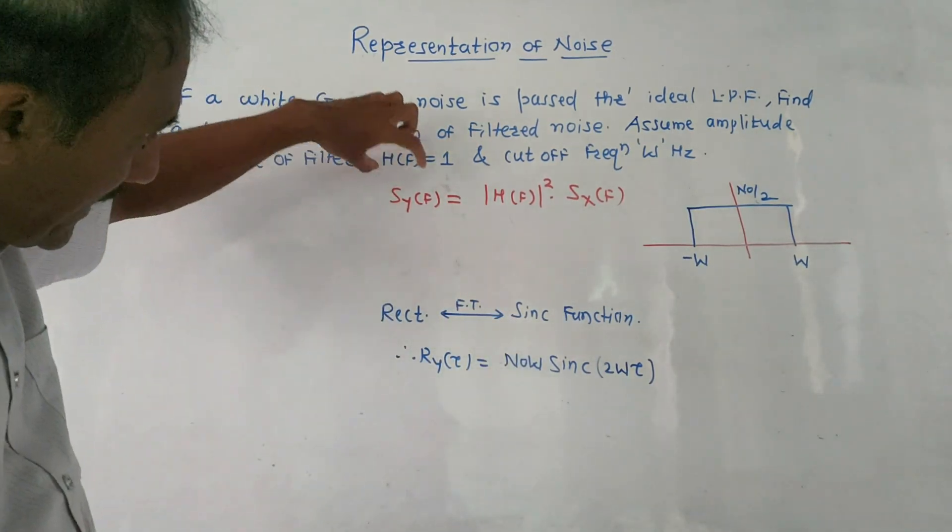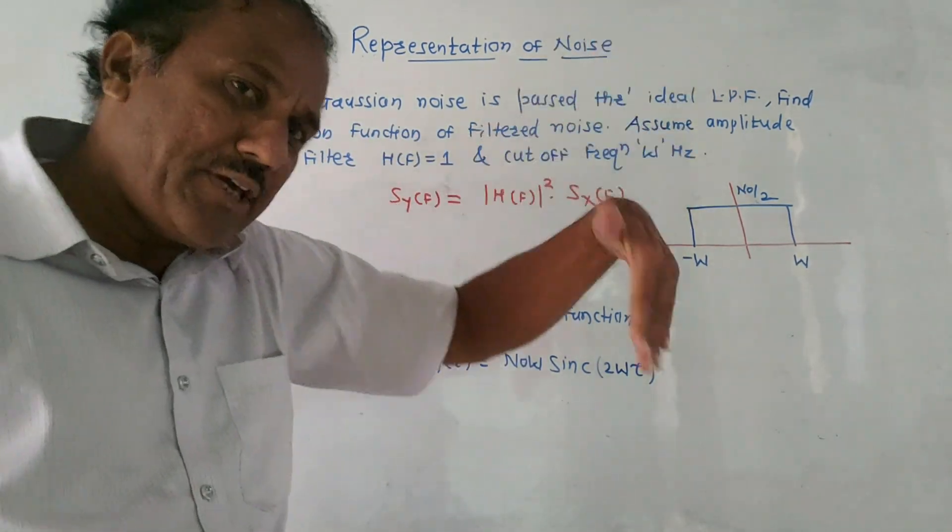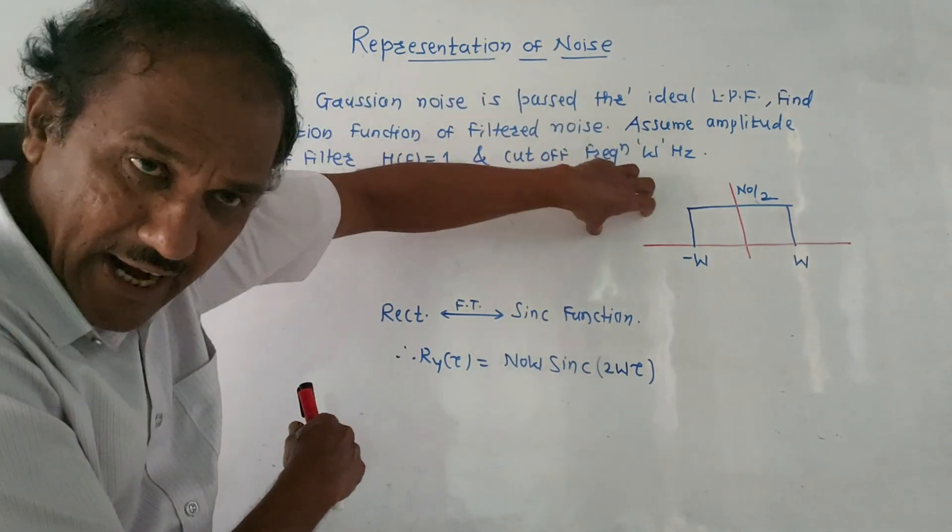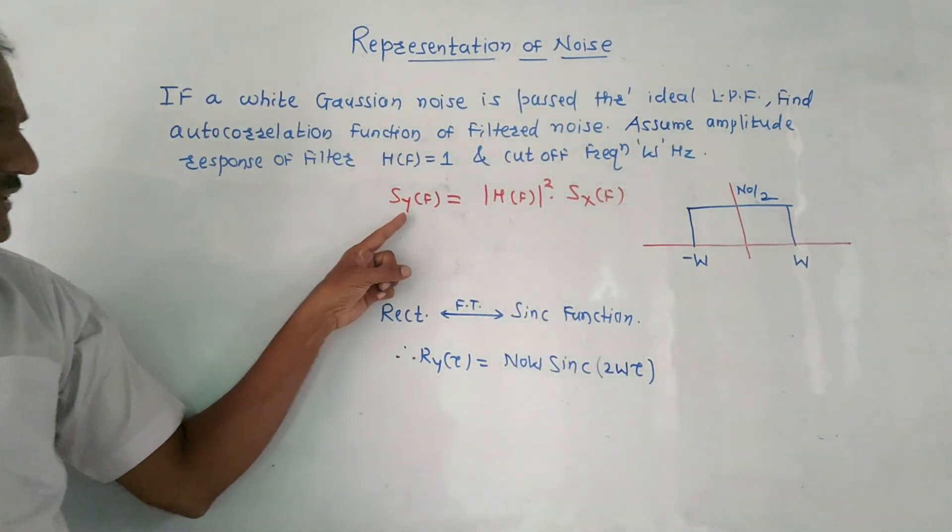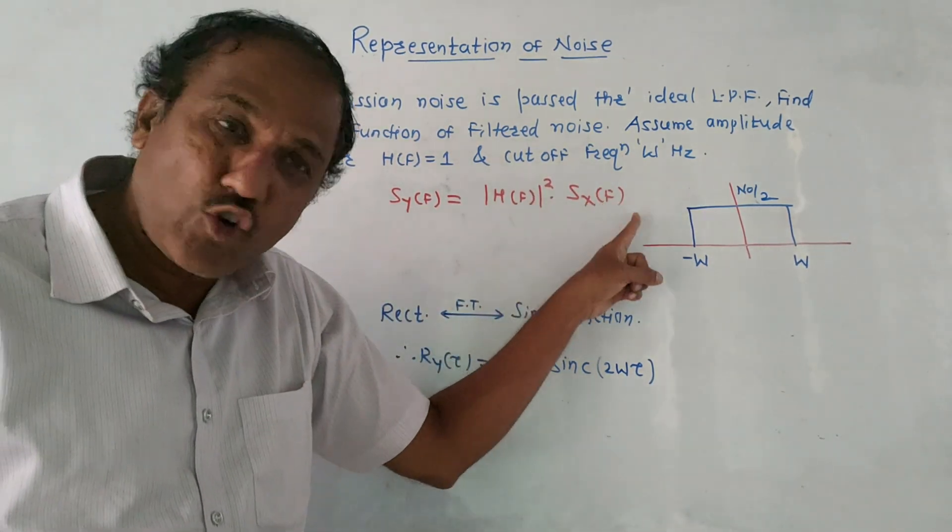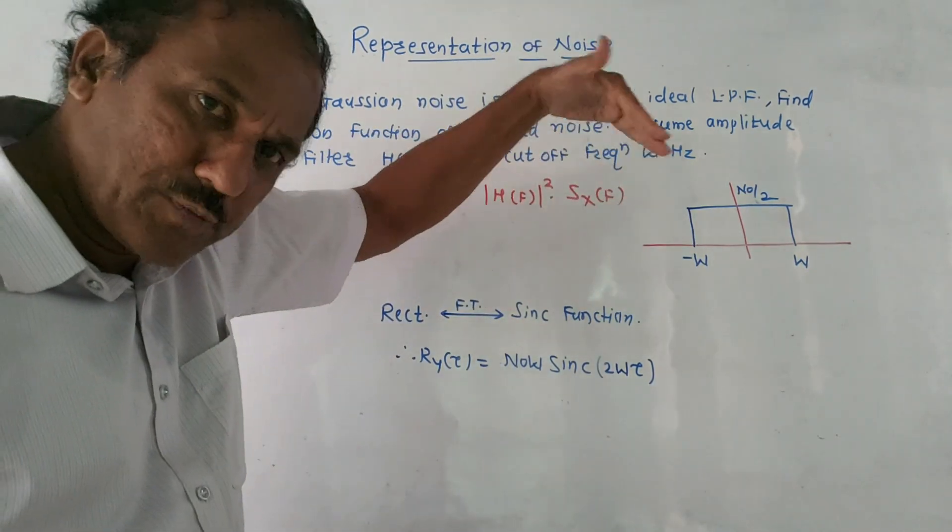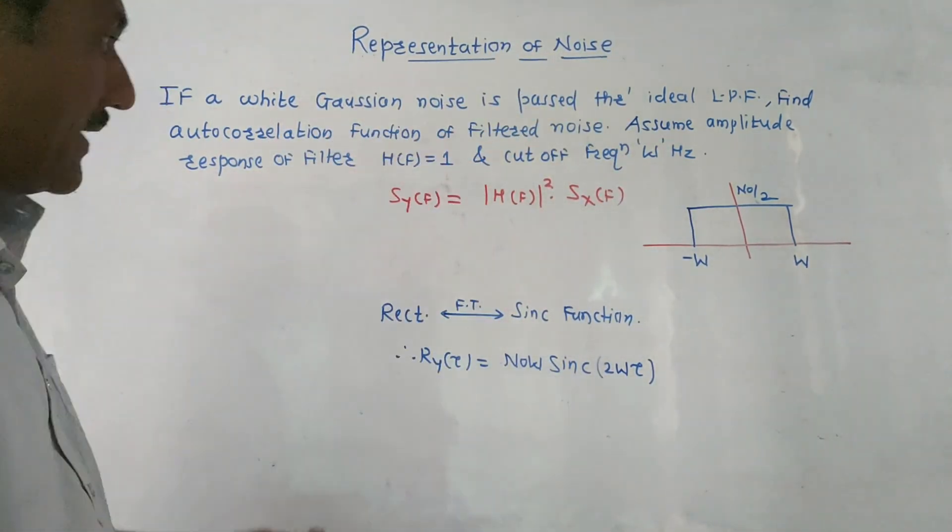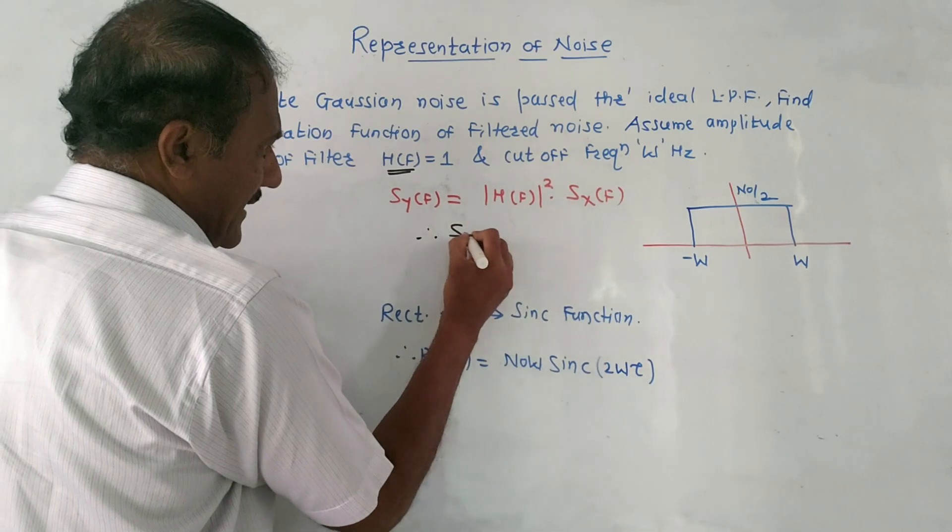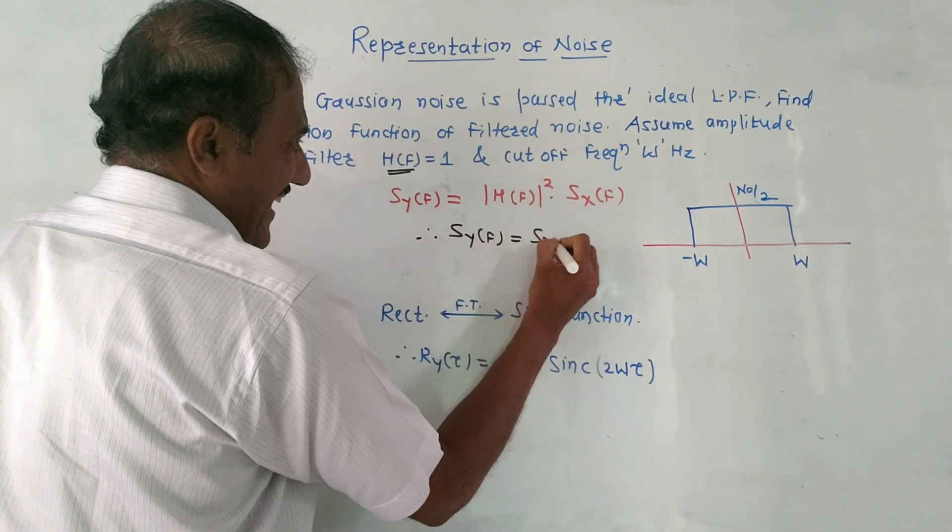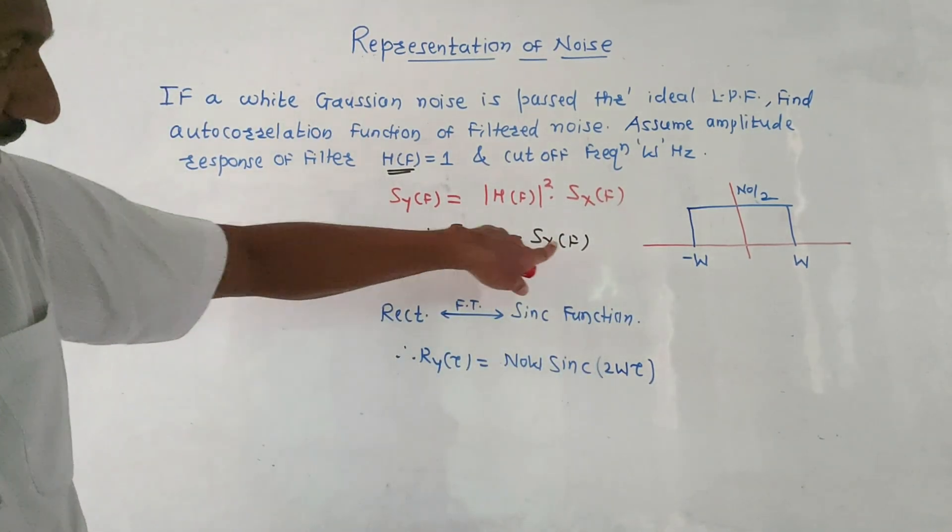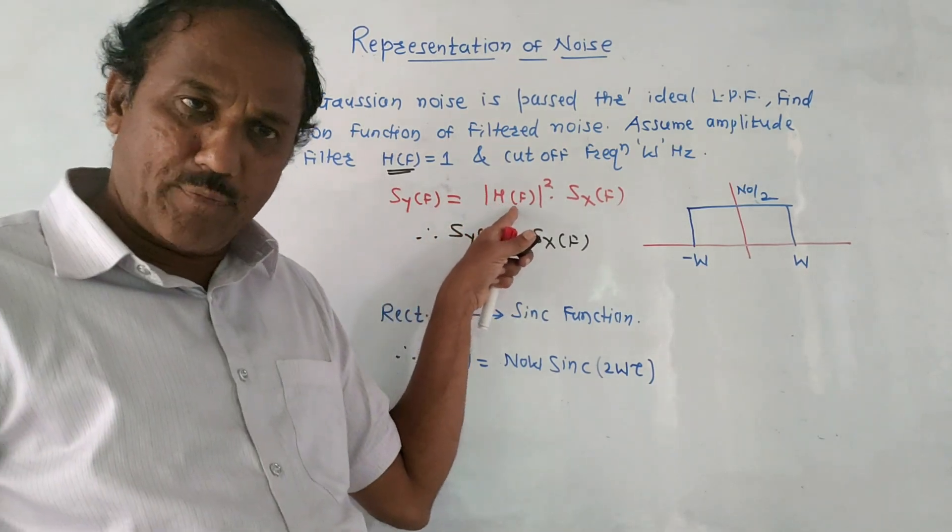H(f) is equal to 1 and cutoff frequency is equal to W hertz. Here the concept - S means PSD. Sy(f) means PSD output, Sx(f) means PSD, power spectral density of input. So power spectral density of output and input are related by using this equation: Sy(f) is equal to mod of H(f) square into Sx(f). Sx(f) is input power spectral density, input PSD. Sy(f) is output PSD. In the question, the value of H(f) is equals to 1. So in this case I can write Sy(f) is equals to Sx(f) - output PSD is same as the input PSD because value of H(f) is equal to 1.